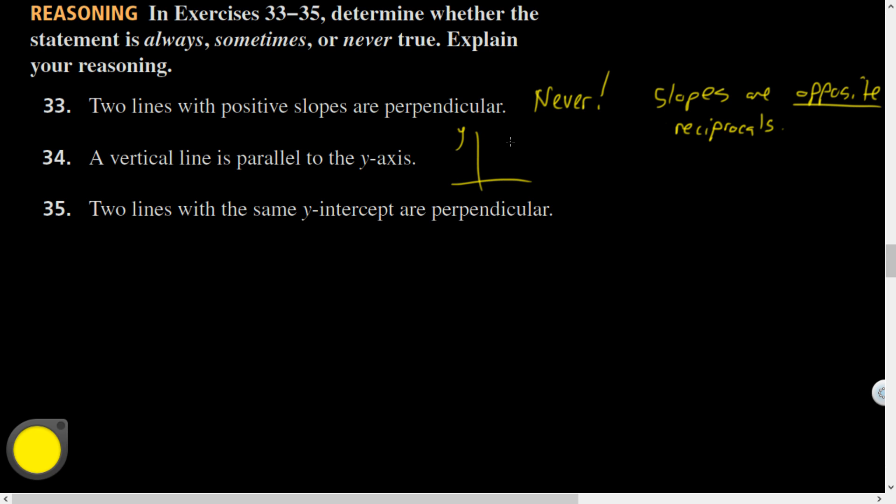Let's jump in on this problem. A vertical line is parallel to the y-axis. Does that make sense? I mean, I think it could, is it sometimes true or always true? A vertical line is parallel to the y-axis. I'm going to say always true. They both have no slope. Vertical lines have no slope. Horizontal lines have zero slope. All right.